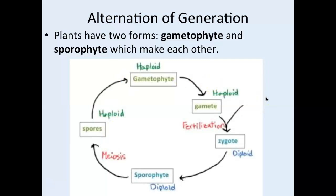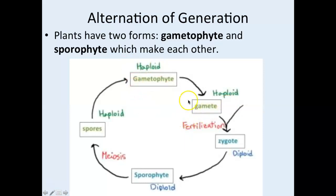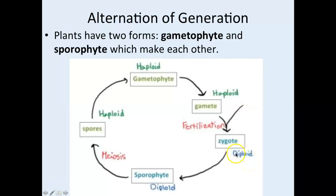Let's go around the diagram. The gametophyte starts off haploid — it's already an n entity. When it makes a gamete — egg or sperm — there's no meiosis because it's already haploid. Gametes are always haploid. When egg and sperm fuse, you have fertilization and get a diploid zygote. The zygote divides and forms a plant called a sporophyte, which is diploid because we started from a zygote.